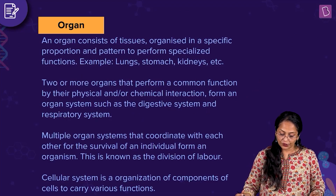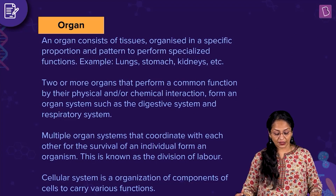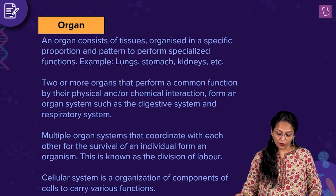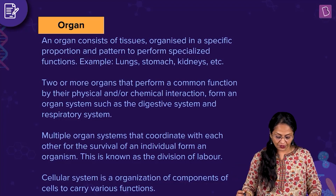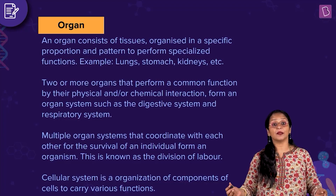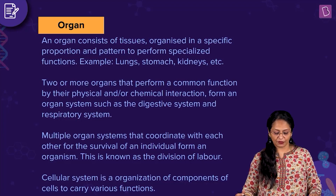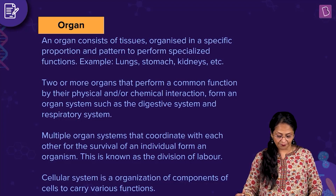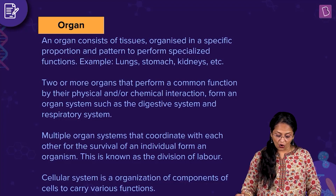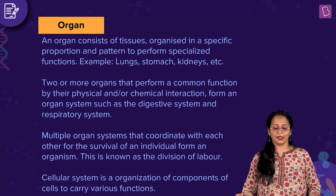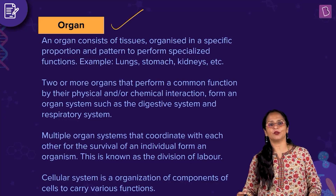An organ consists of tissues organized in a specific proportion and pattern to perform specialized functions — such as the lungs, stomach, kidneys. Two or more organs that perform a common function by physical and/or chemical interaction form an organ system, such as the digestive or respiratory system. Multiple organ systems that coordinate for the survival of the individual form an organism — this is known as division of labor. So the right answer is: a group of tissues joined together forms an organ.